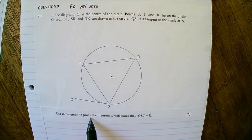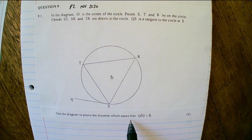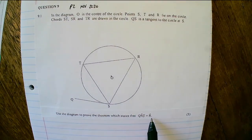Use the diagram to prove the theorem which states that QST is equal to angle R.